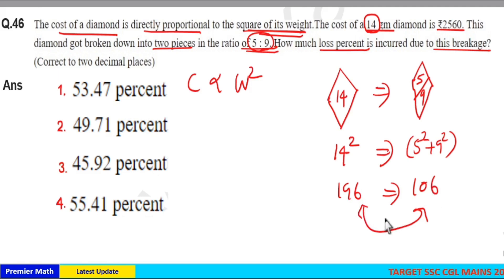I'll take it as 14 square part and 5 square plus 9 square part. Then this will become 196 part and 106 part. So loss is equal to 90 part.